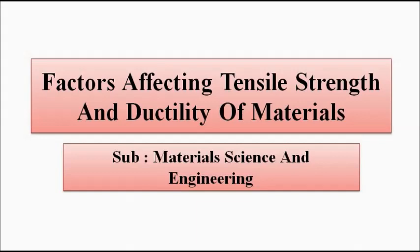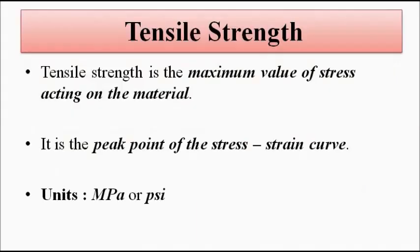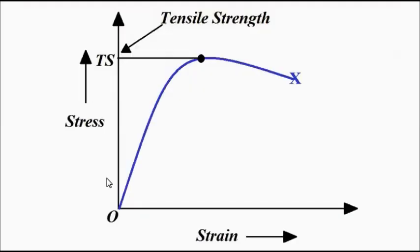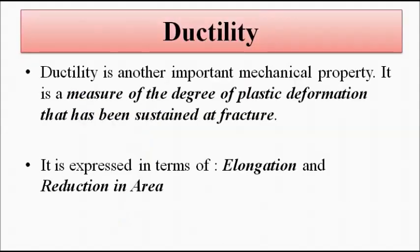First, a quick look at the basic concepts. Tensile strength is the maximum value of stress that a material can withstand without undergoing fracture. It is the peak point of the stress-strain curve, measured in megapascals or pounds per square inch. It can be determined by locating the peak point, drawing a horizontal line, and reading where it touches the stress axis.